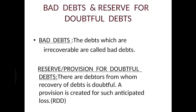The first very important adjustment is bad debts and reserve for doubtful debts. What is bad debts? The debts which are irrecoverable are called bad debts. Irrecoverable means one which cannot be recovered — the amount we are not going to receive from the debtors is known as bad debts. It is surely a loss for the firm.